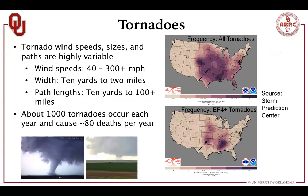As many of you know, tornadoes come in all shapes and sizes, producing wind speeds that are highly variable — some relatively weak at 40 miles an hour, all the way up to over 300 miles an hour, producing some of the strongest winds on earth. Some tornado paths are very short while others go for over 100 miles. Part of the mystery of tornadoes is why there is all this variability. In the United States about a thousand tornadoes occur each year, causing about 80 deaths per year, and in many cases a single tornado can produce over a billion dollars in damage.